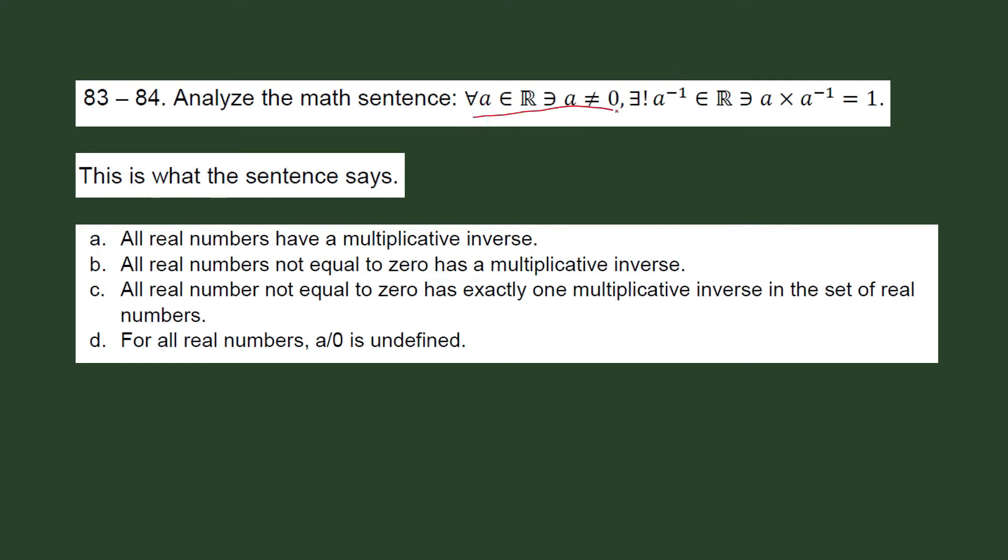For any real number not equal to zero or for any real number such that that number is not equal to zero, there is a unique element in R called the A inverse or another way of putting it is there is exactly one A inverse in the set of real numbers. That is the meaning of that. There is only one. There is exactly one. A inverse in R such that A times A inverse is equal to one.